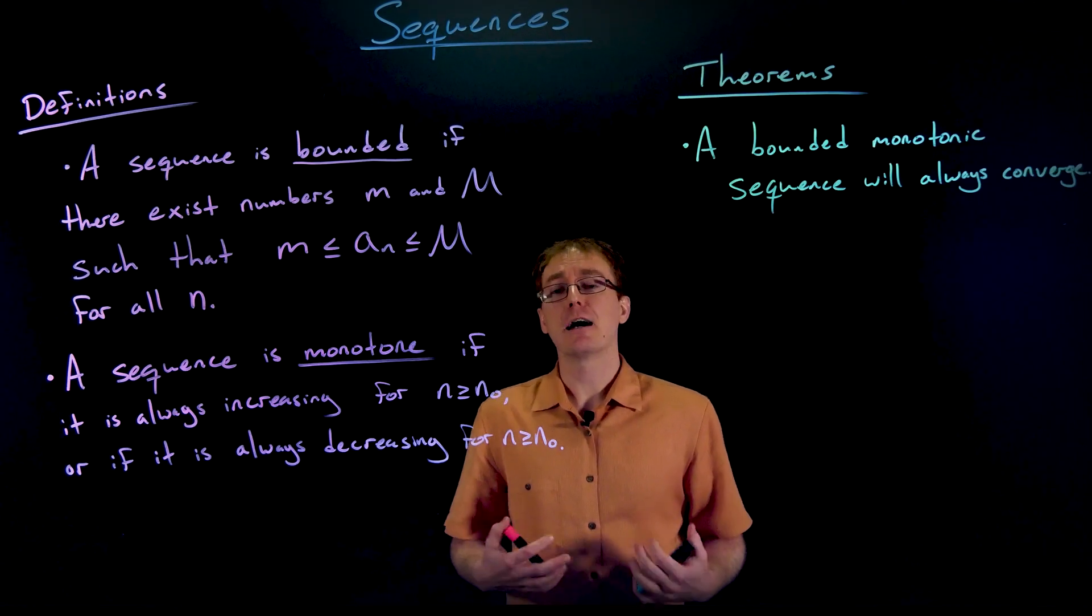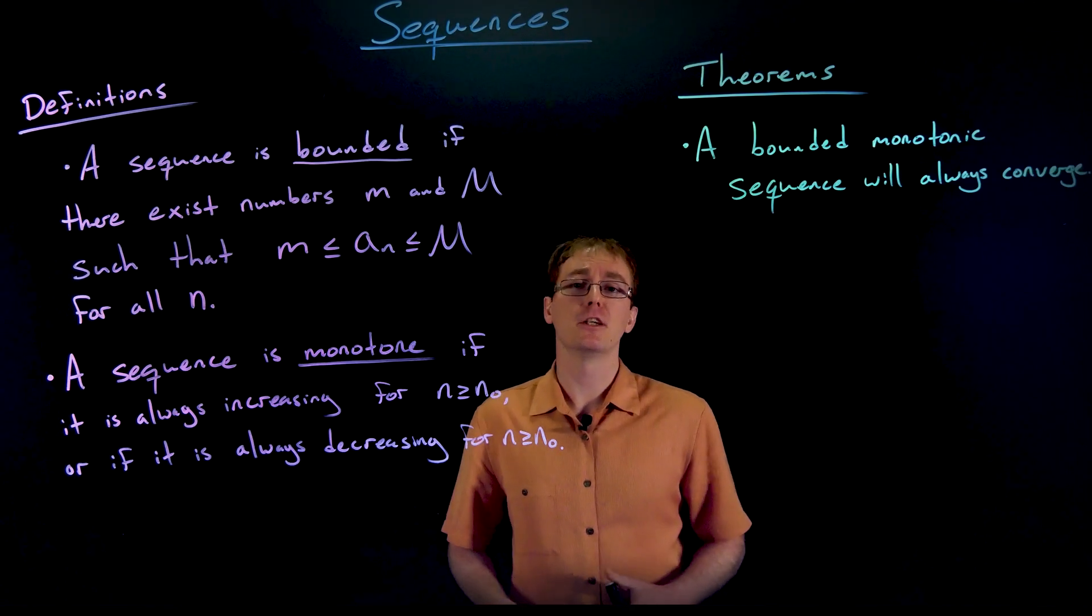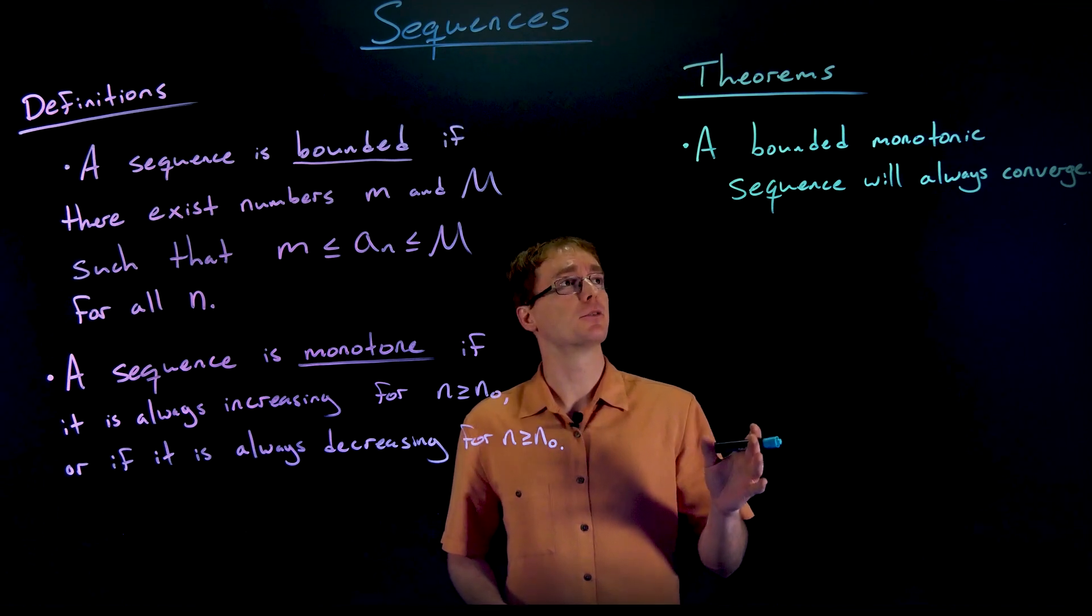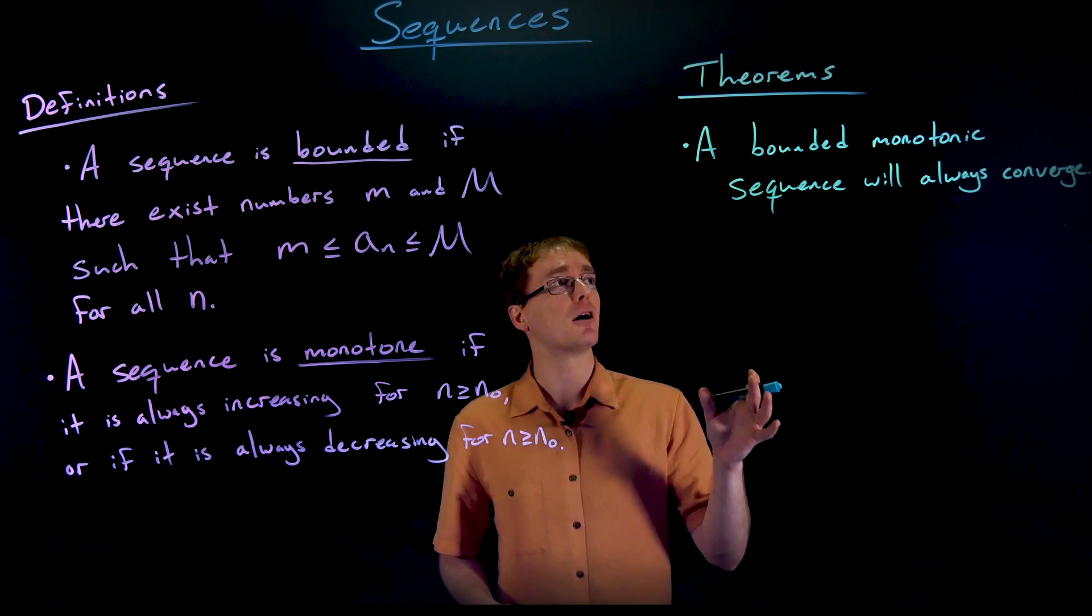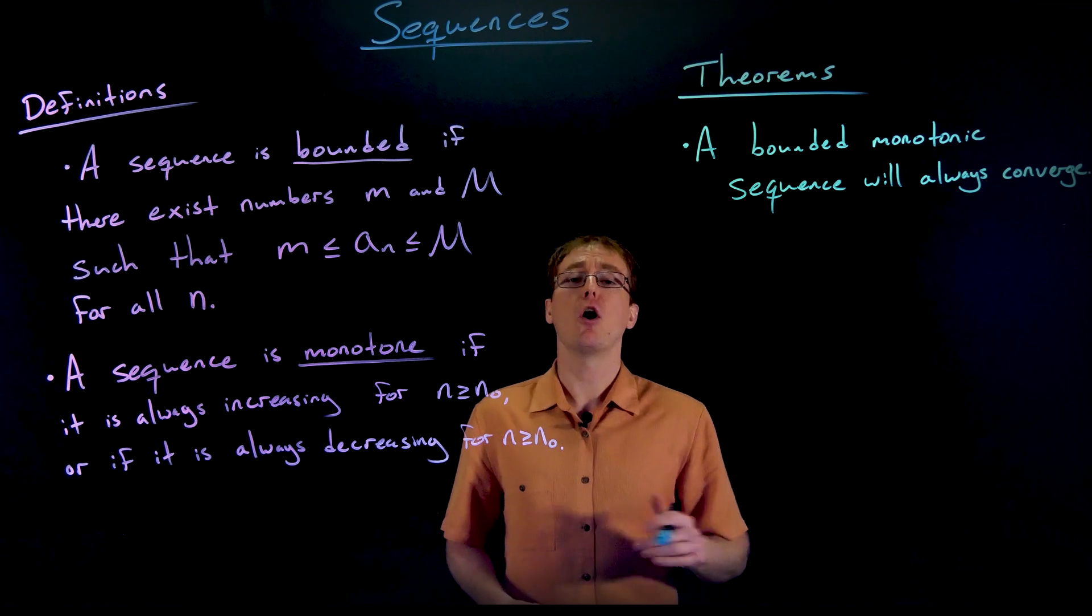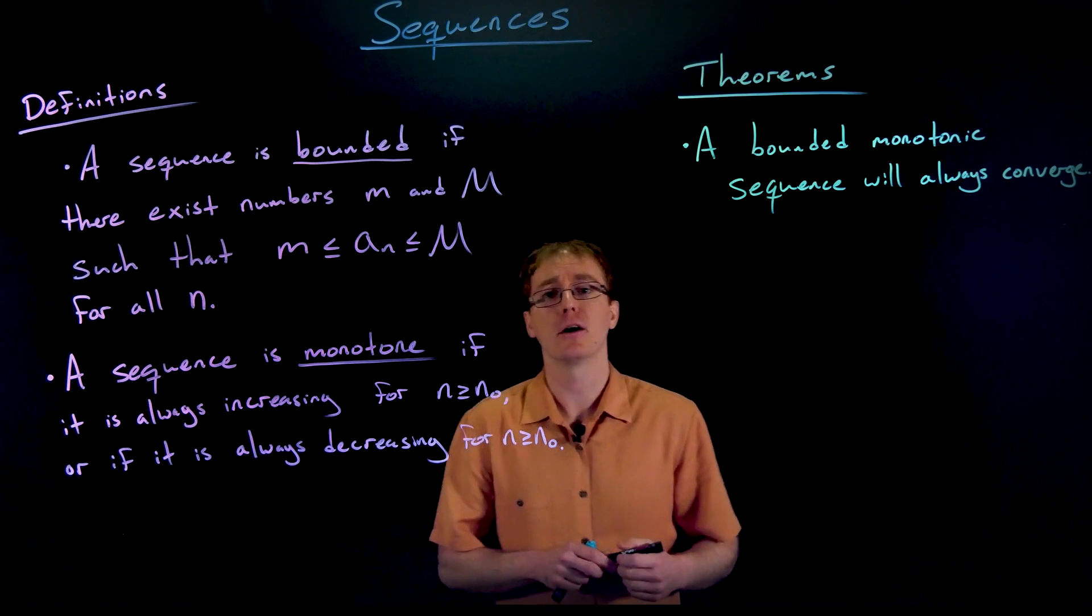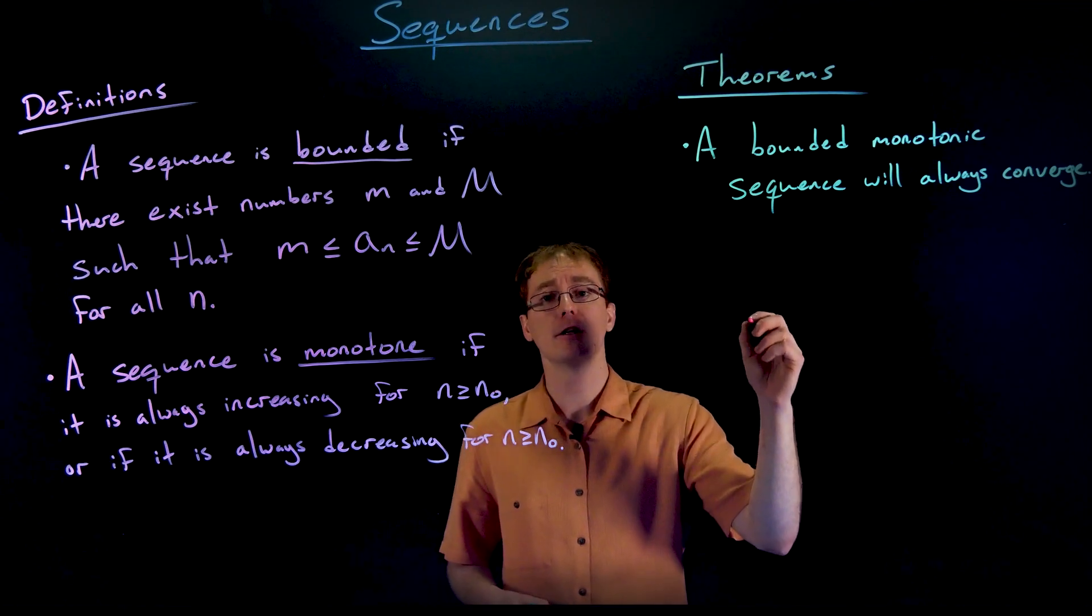With these two definitions, we can now talk about what we call the monotone convergence theorem, which I have written simply up here. This theorem says that if a sequence is bounded and monotonic, it will always converge. We're not going to go through a very detailed or rigorous proof of this theorem, but a quick little picture should help us make sense of it.